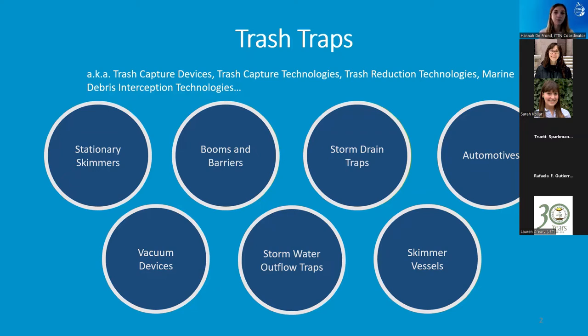These categories include all that are on the screen right now. So that's stationary skimmers, booms and barriers, storm drain traps, automotives, vacuum devices, stormwater outflow traps, and skimmer vessels as well.